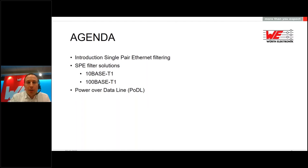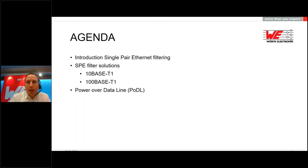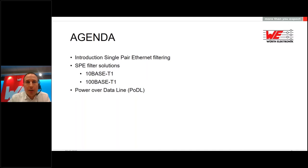Not only Single-Pair Ethernet filters, but also other filters—and why we need a filter. Then I go over to the different filter solutions for Single-Pair Ethernet: one for 10Base-T1 and one for 100Base-T1, followed by Power over Data Line for both speeds. 1000Base-T1 is still missing because we are still working on a solution there. Maybe later, when it is time, I can also give some details.